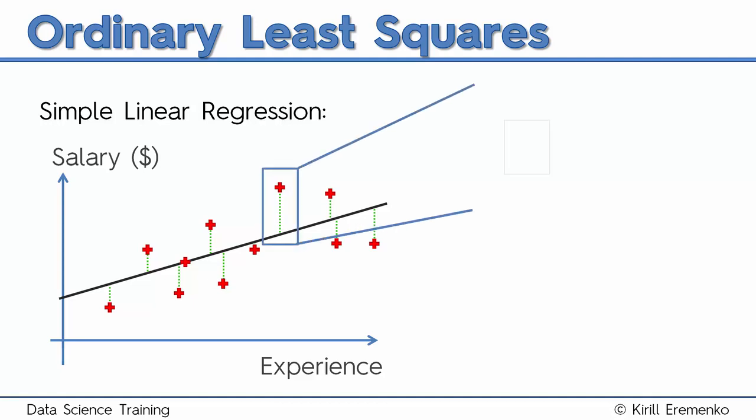Here you can see that the red cross is where that person is sitting in terms of salary. Let's say this person with 10 years of experience is earning $100,000. The model line, the black line at the bottom, tells us where that person should be sitting according to the model in terms of salary.